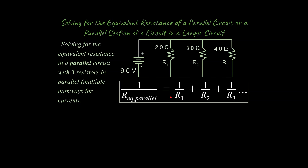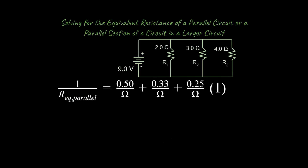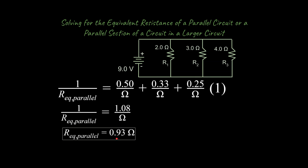The equation for a parallel circuit is different from a series circuit. For the equivalent parallel resistance: 1 over R_eq equals 1/R1 plus 1/R2 plus 1/R3 — you add up as many terms as you have resistors. We plug in our numbers and convert fractions to decimals. A common mistake students make is stopping here and saying the equivalent parallel resistance is 1.08 ohms — that's incorrect. You must take the inverse, giving an equivalent parallel resistance of 0.93 ohms.